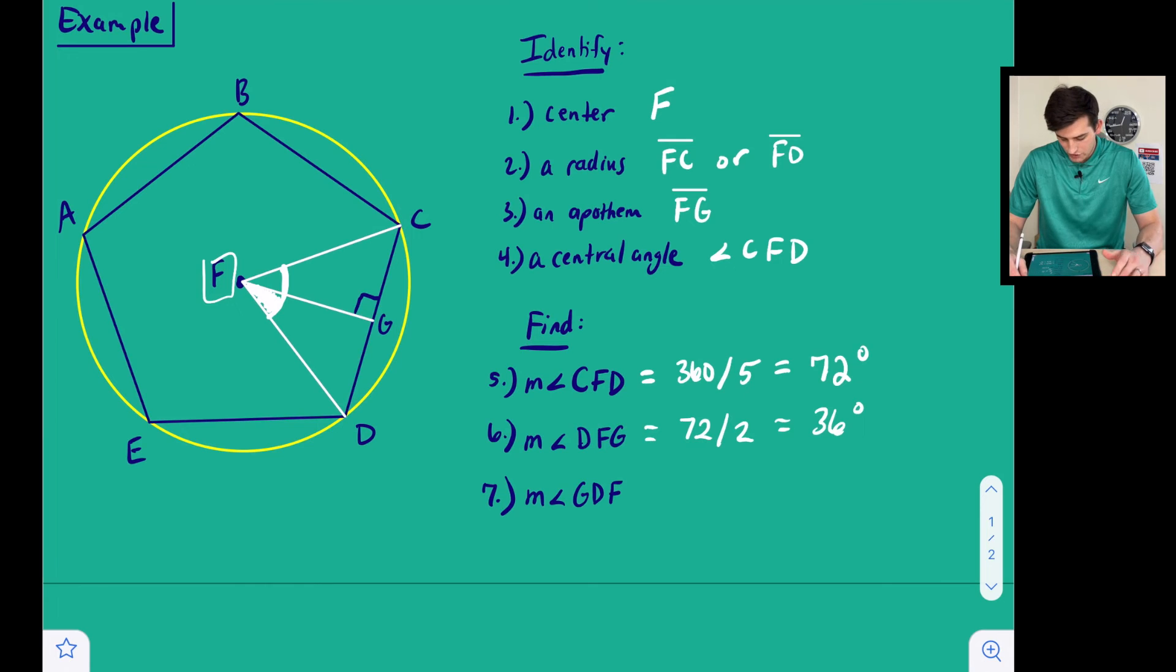Lastly we want to find angle GDF. If we look at our triangle right now and we add in some of the measures that we found, obviously we know that this angle here would be 90 degrees, and we just found DFG which was 36 degrees.